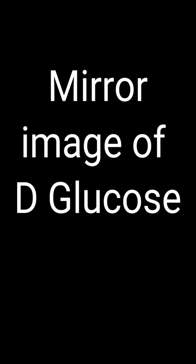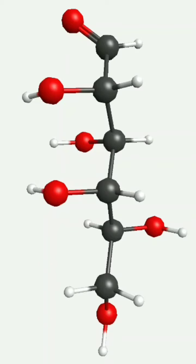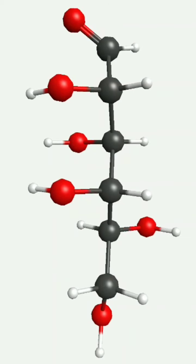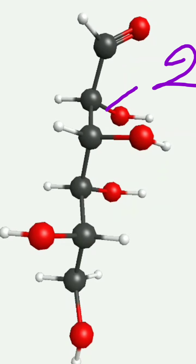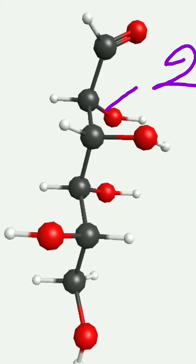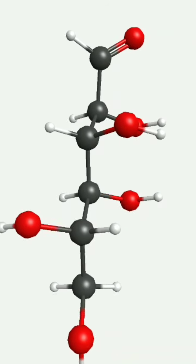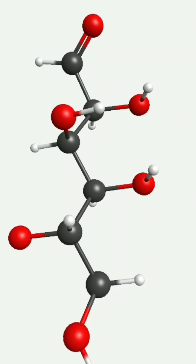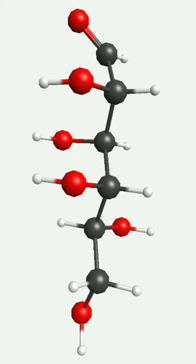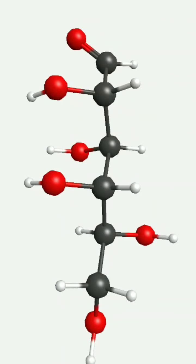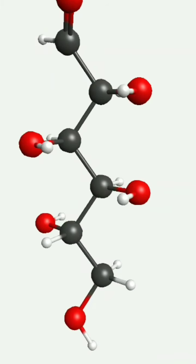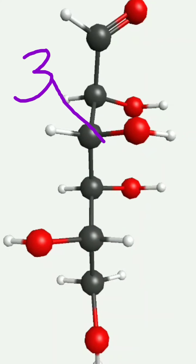We will see the mirror image of D-glucose. In this mirror image, all configurations of hydroxides and hydrogens at carbon numbers two, three, and four are just reversed. To visualize the configuration of carbon number two, you have to look at it from your side — you can see OH is on the left side. In D-glucose it was on the right side; now it is on the left side. Similarly, on carbon number three, hydroxide is on the right side, whereas in the previous configuration it was on the left side.